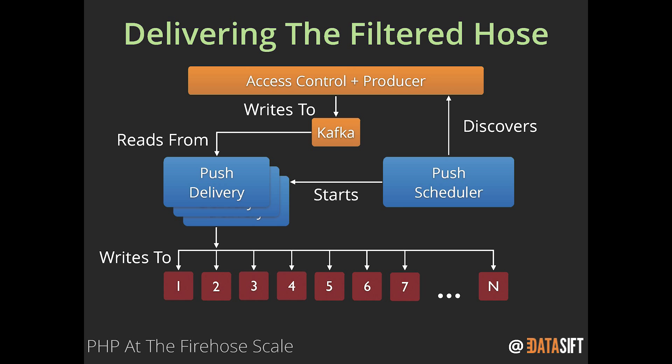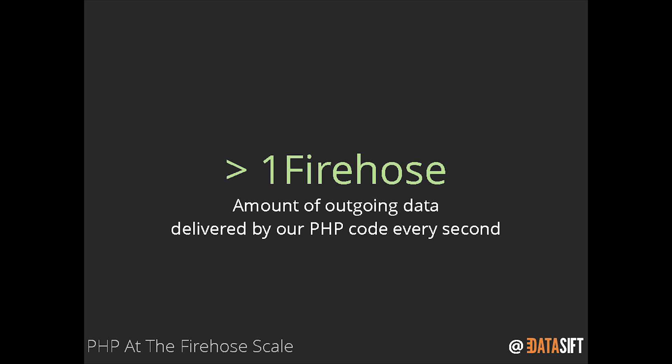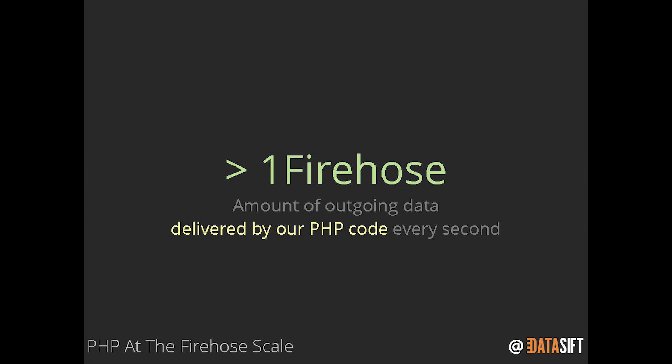Some numbers. We are delivering across all our customers more than one firehose of data. Every second, this is the amount of data going out to our customers via this PHP code. Our peak for delivering to customers is more than two firehoses at a time - and again, we're doing that with PHP, we just scale up, it's not a problem. That architecture scales because it's a share-nothing architecture - there's no databases in there. All we've got is store-forward buffers. No application servers. The PHP mentality is to do away with all that and just go down to the bare essentials.